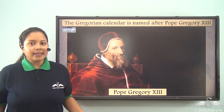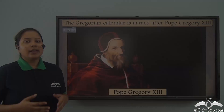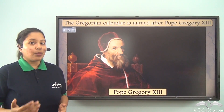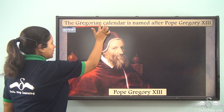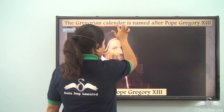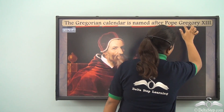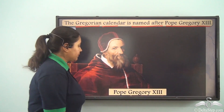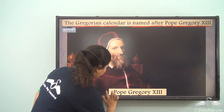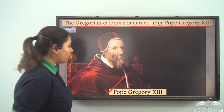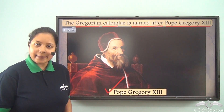So finally the Gregorian calendar came into practice. How was it named? The Gregorian calendar is named after Pope Gregory the 13th. This is the picture of Pope Gregory the 13th and it was named after him.